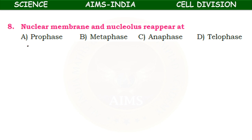Nuclear membrane and nucleolus reappear at — prophase, metaphase, anaphase, or telophase? During cell division, by the end of nuclear division, that is telophase, two daughter nuclei are formed by the reappearance of the nuclear membrane and nucleolus. So the answer is telophase.